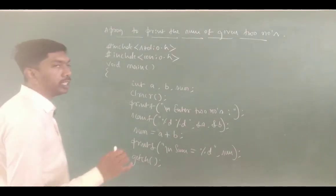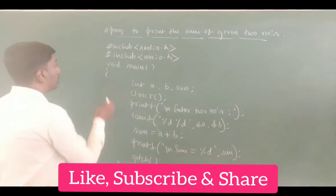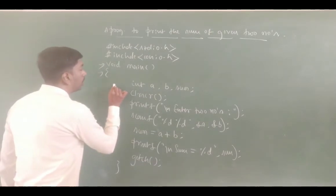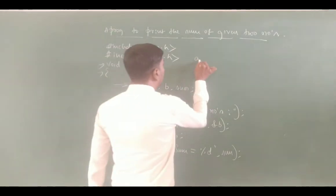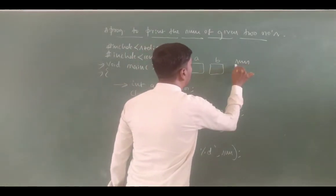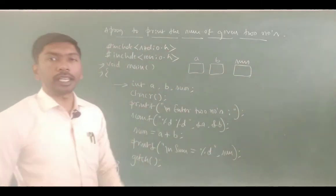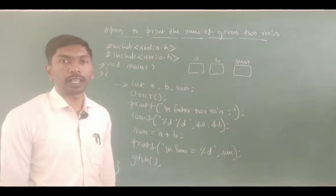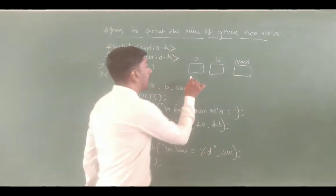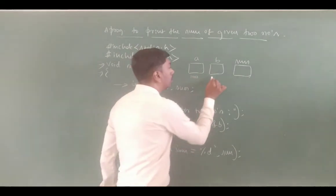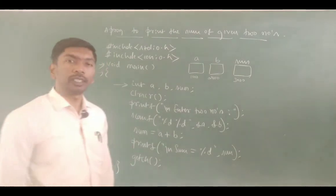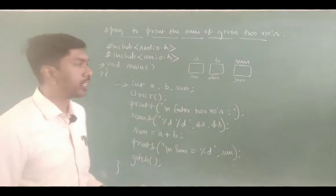Tracing: execution starts from void main, open the flower brace. int a, b, sum — that means a has a memory block, b has a memory block, sum has a memory block — three memory blocks created. 2 bytes each because integer is 2 bytes. Assume addresses 1000, 2000, 3000.